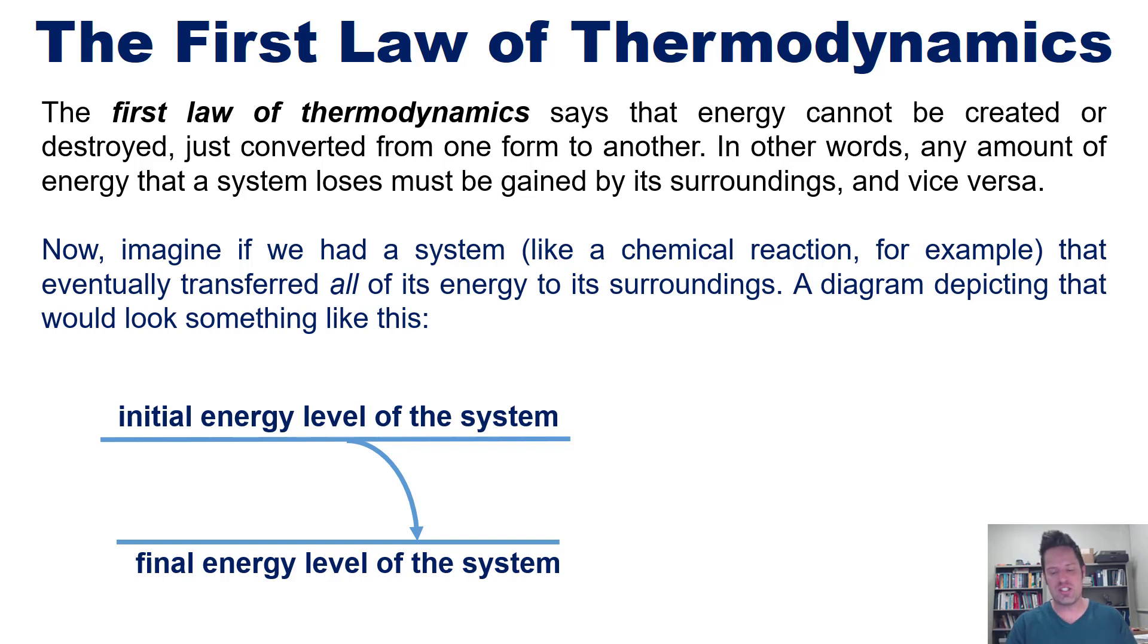Now the difference between these two levels represents the energy that is gained by the surroundings. That is the energy that is lost by the system as it expels that energy into the surroundings. We can call that delta E or change in energy.